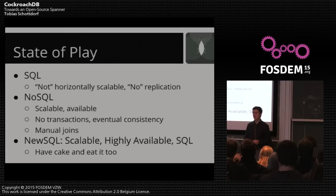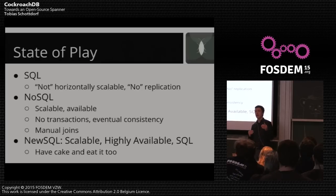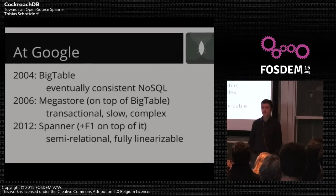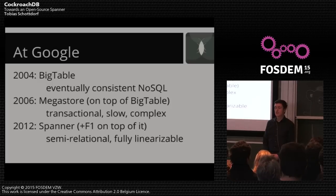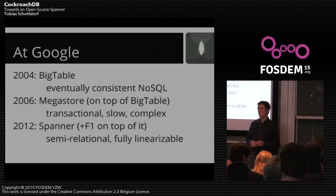In many NoSQL cases you have something that tries to compensate for the absence of real transactions — workarounds like compare-and-set, eventual consistency, manual joins, and data integrity issues across your cluster. Then there's a third generation that's been popping up for the last two to four years, which I'd call NewSQL, that tries to combine the advantages of both previous eras: scalability, high availability, and transactionality — SQL properties. Since this is Go and Go is very connected to Google, let's look at Google themselves.